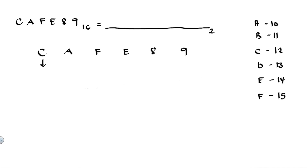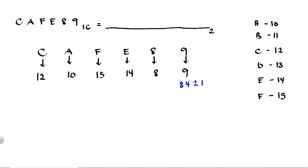So C is equivalent to 12, A is equivalent to 10, F is equivalent to 15, E is equivalent to 14. 8 is also 8 in decimal, and 9 hex is also 9 in decimal. Then set up the binary place values 1, 2, 4, and 8 for each decimal value.